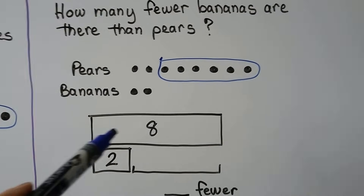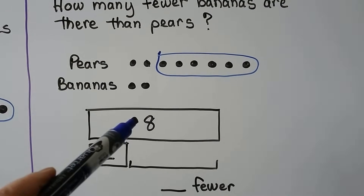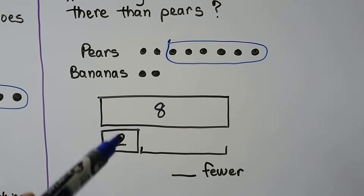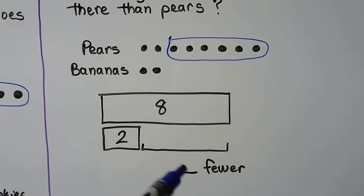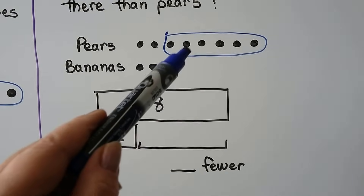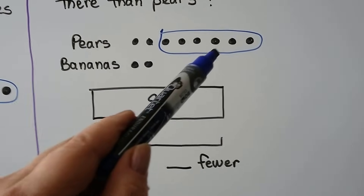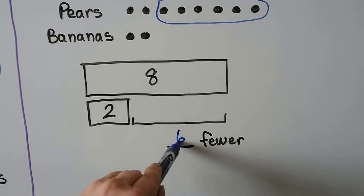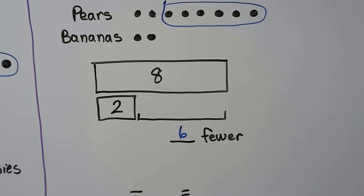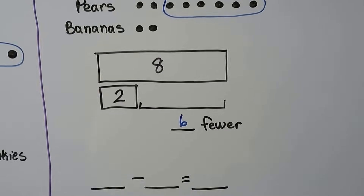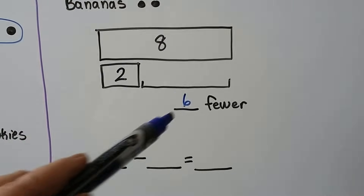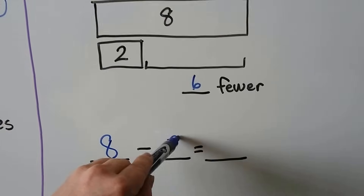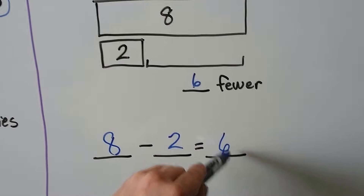We make our bar model: eight is the big bar, two is the number of bananas, and the difference is six. Six fewer bananas than there are pears. We can write our number sentence using the bar model: eight minus two is equal to six.